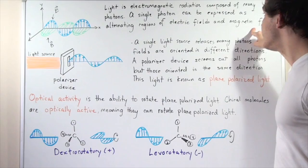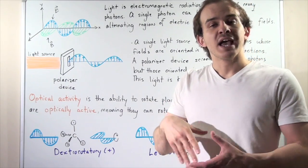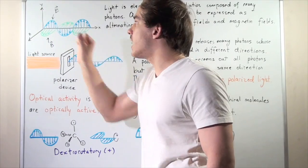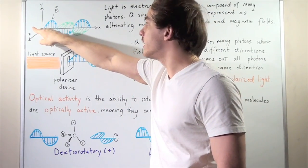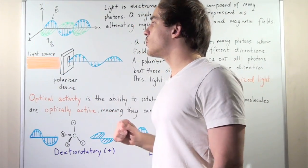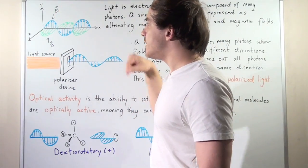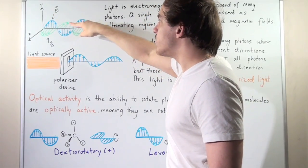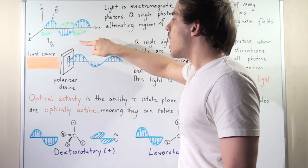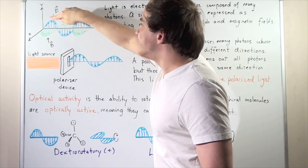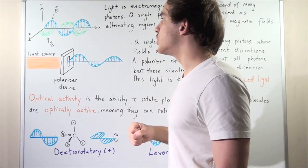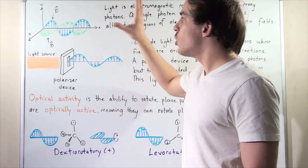These electric and magnetic fields are perpendicular to one another, and are also perpendicular to the direction of the photon. Here's an example of a single photon traveling along the x direction. The blue regions are the positive and negative alternating regions of the electric fields, and the green regions are the alternating regions of the magnetic field. The magnetic field is along the x-z direction, and the electric field is along the x-y direction — notice they're both perpendicular to one another.